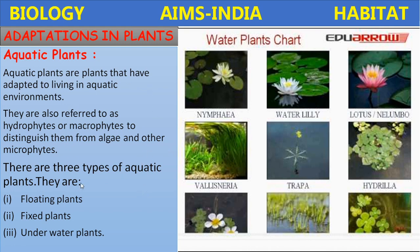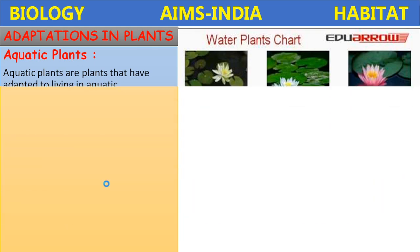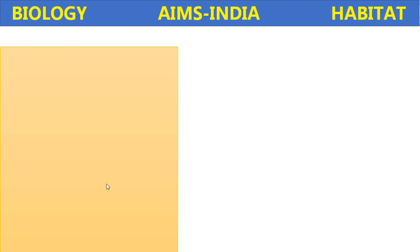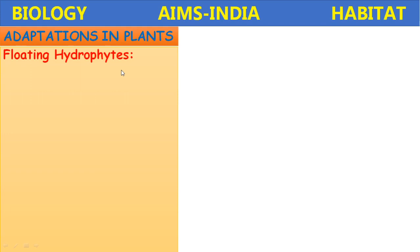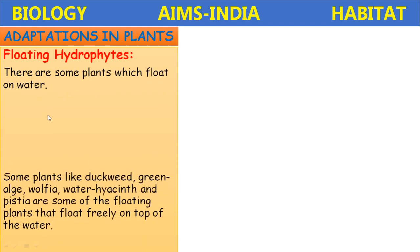These plants possess a special type of tissue which helps them adapt and survive in water. Let us discuss in detail about the types of hydrophytes. Floating hydrophytes are plants which float on water.